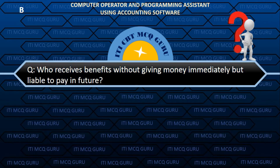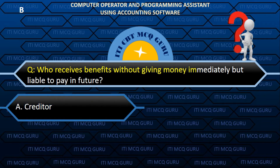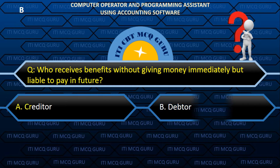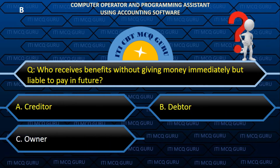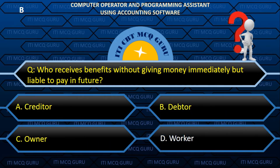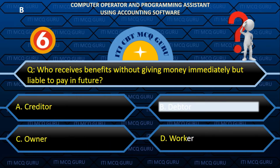Who receives benefits without giving money immediately but is liable to pay in the future? B. Debtor.